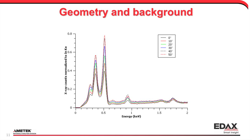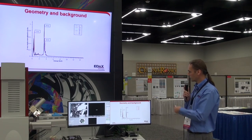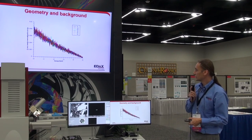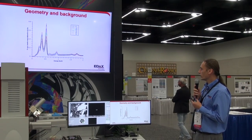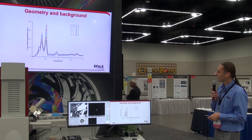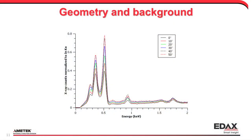These are spectra acquired at different tilts on an indium-tin oxide (ITO) sample, from zero up to 50 degrees tilt. The composition is the same — the same grain, just tilted and refocused. If we look at the tail of the background where we saw charging before, there's no difference here; it all tails off nicely towards 15 kilovolts. But in the low energy range, as I tilt the sample towards the detector, the background starts to go up — subtle, but it is there.